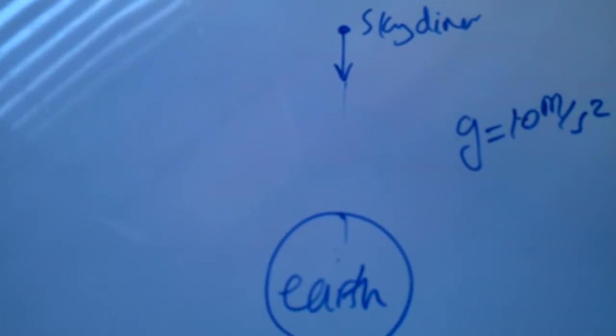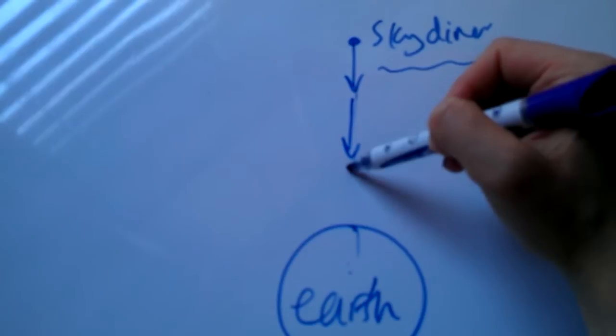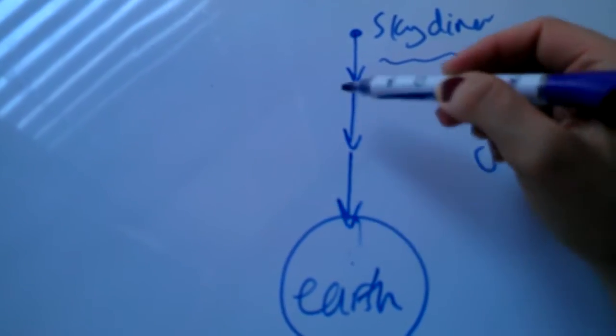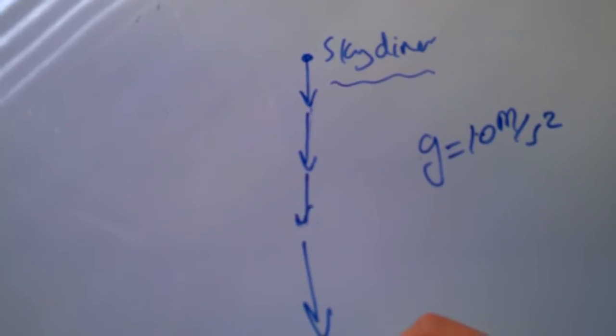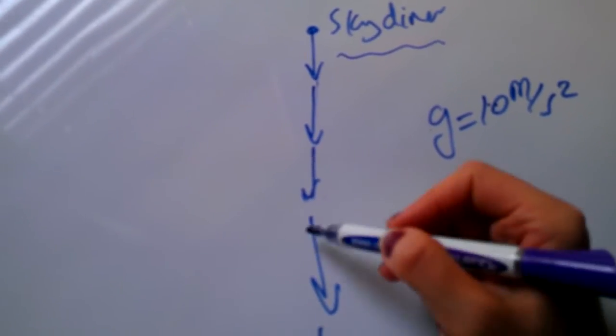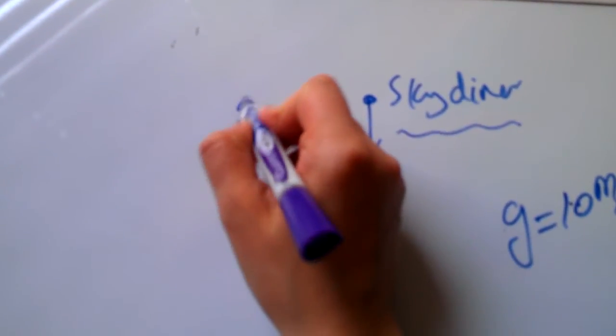Now the skydiver, when he falls down, the velocity vector for him gets bigger and bigger and bigger. Let's just drop Earth down here. So suppose this is Earth. The velocity gets bigger and bigger and bigger. And I said, if velocity grows, air resistance grows.